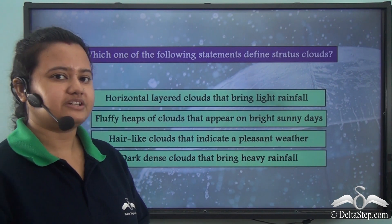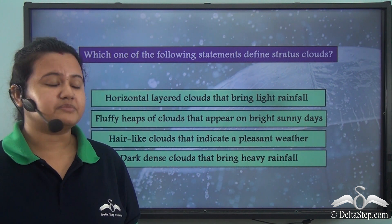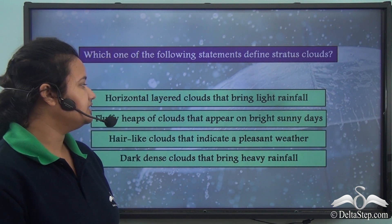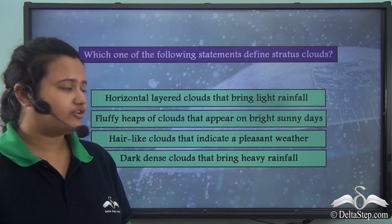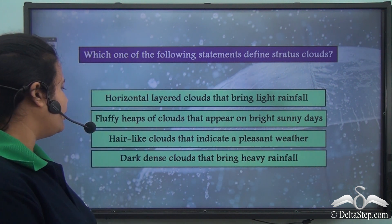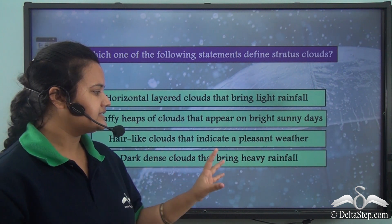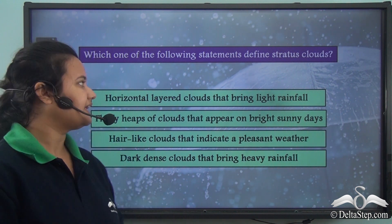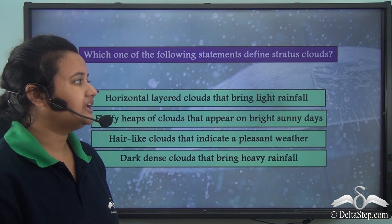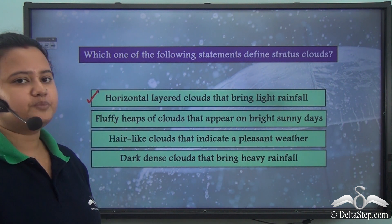Before we proceed, let us try to answer this question: Which one of the following statements defines stratus clouds? Is it horizontal layered clouds that bring little rainfall? Fluffy heaps of clouds that appear on bright sunny days? Hair-like clouds that indicate pleasant weather? Or dark dense clouds that bring heavy rainfall? The correct answer is horizontal layered clouds that bring little rainfall are known as stratus clouds — the first option is correct.